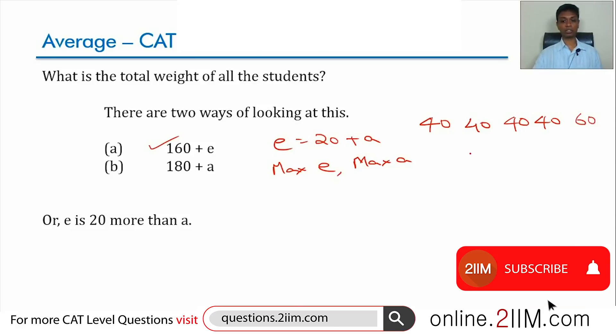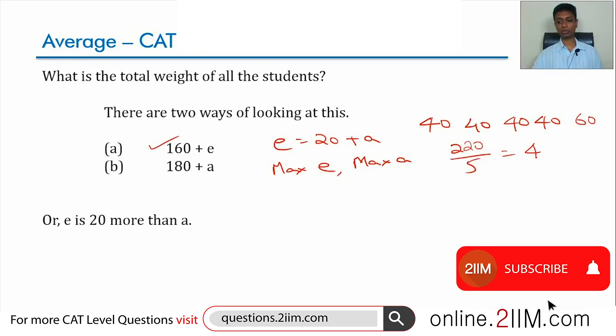This satisfies all conditions. This is the scenario where the average will be maximum. The total is 40×4 plus 60, which is 220, and the overall average is 220 divided by 5, which is 44 kilograms.